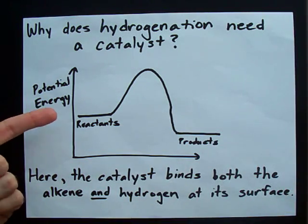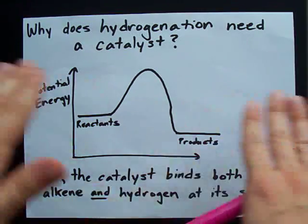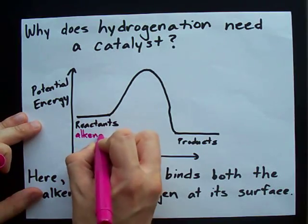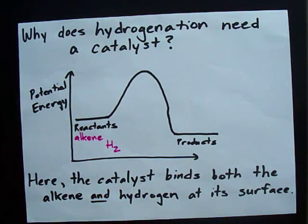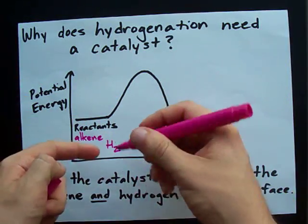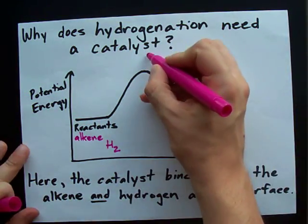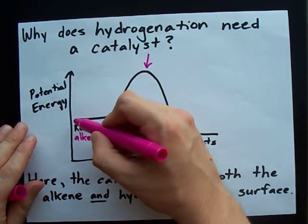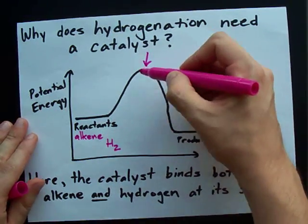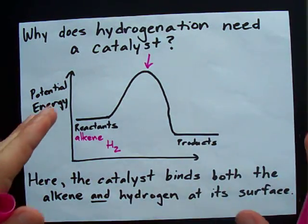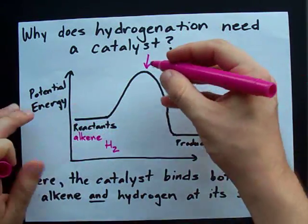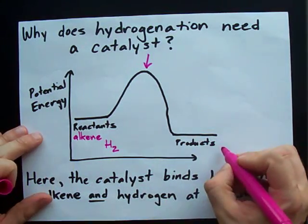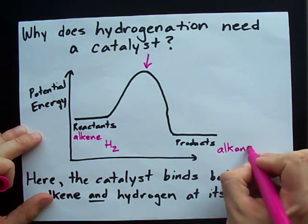This is the potential energy diagram for hydrogenation without a catalyst. You've got your reactants here — that means you have an alkene and you have your H2. When you're breaking open the double bond and breaking open the hydrogens, that requires a lot of energy. You've got to ramp up the amount of energy in your system all the way up here to break those bonds. Once the two things react with each other, you slide back down, you get some energy out, and you end up with stable products — in this case, just an alkane.